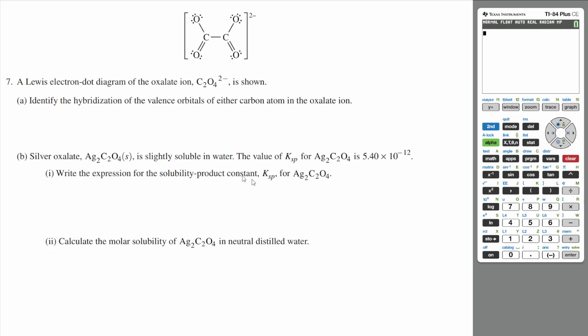All right, let's do question 7, which is the last question in this FRQ. A Lewis-Dot diagram of the oxalate ion is shown. Part A: identify the hybridization of the valence orbitals of either carbon in the oxalate ion.